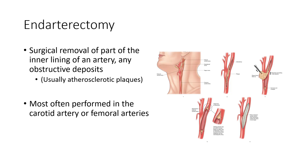Another treatment you might see is an endarterectomy. This is a little rarer — we don't do these as much anymore — but if someone has serious plaque buildup often in the carotid or femoral arteries, what they'll do is surgically open up the artery and remove it. This is for serious clots or really large plaque buildup. An endarterectomy involves opening up the artery, removing the blockage, and then suturing it back up.